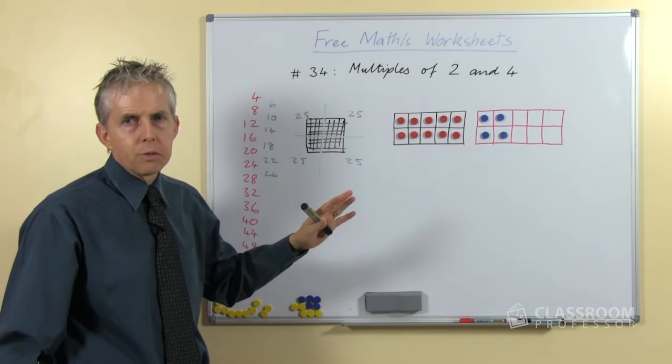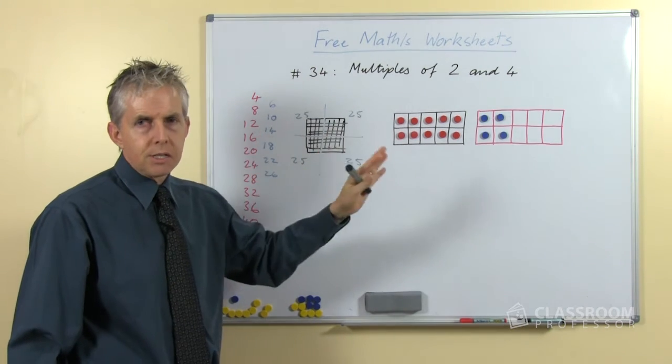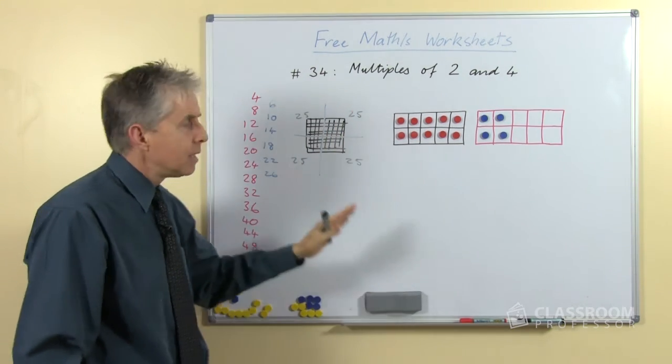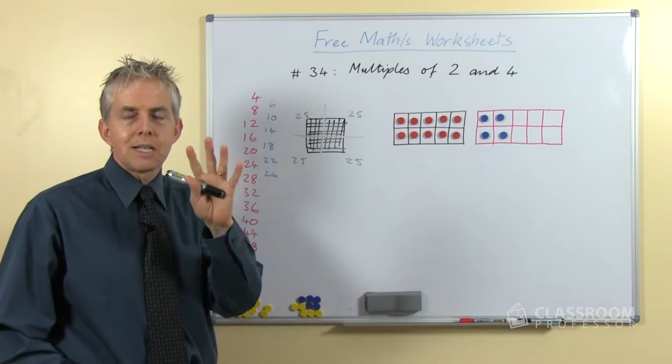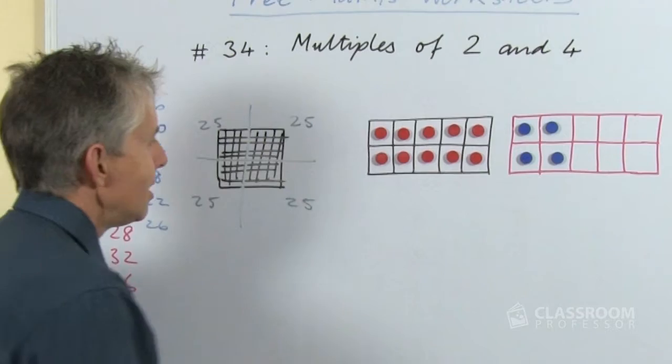So much like multiples of 2 where we only have to test the ones digit, in multiples of 4, we only have to test the last 2 digits, the tens and the ones.